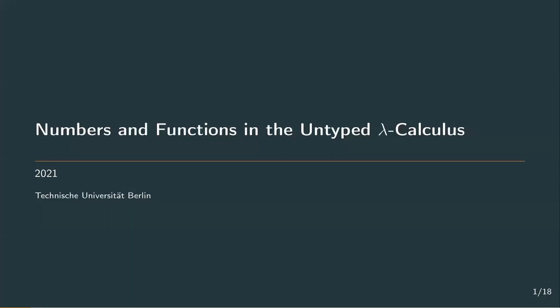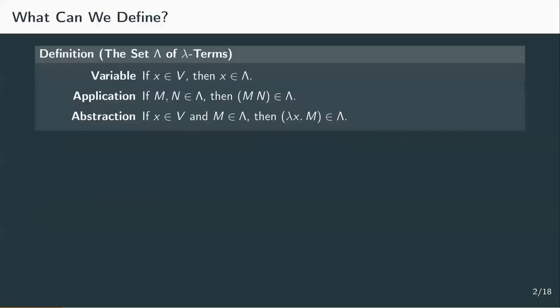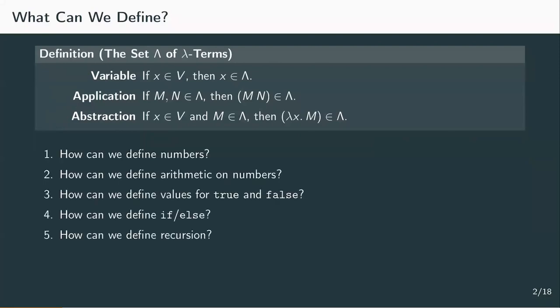There are only three rules to construct a lambda term: the variable rule, the application, and abstraction rules. This might seem like it doesn't give us a lot to work with, but these three constructs are enough to define numbers, arithmetic operations on numbers, a way to represent boolean values so true and false, a way to represent basic control flow in the form of if and else, and a way to represent recursion which allows us to achieve Turing completeness.